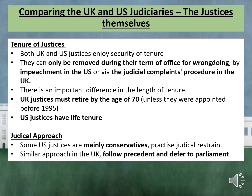Both UK and US justices enjoy security of tenure. They can only be removed during their term of office for wrongdoing — by impeachment in the US or via the judicial complaints procedure in the UK. There is an important difference in the length of tenure: UK justices must retire by the age of 70, unless they were appointed before 1995, whereas US justices have life tenure.